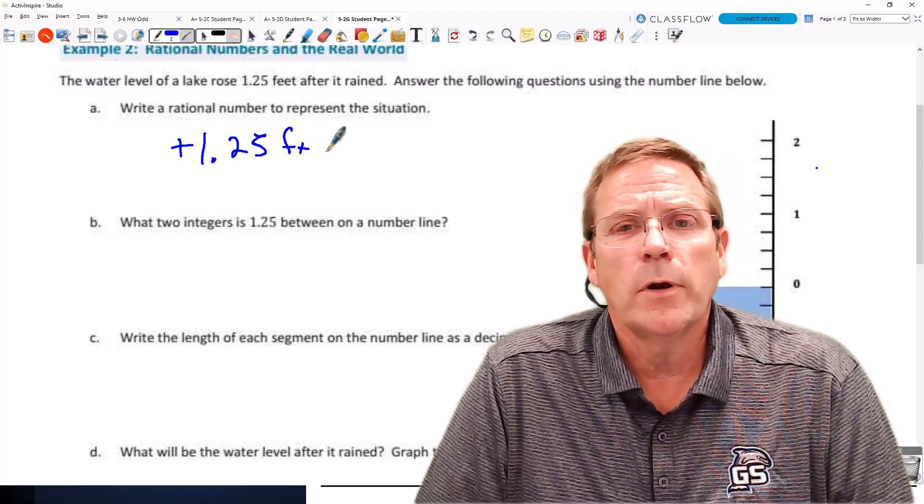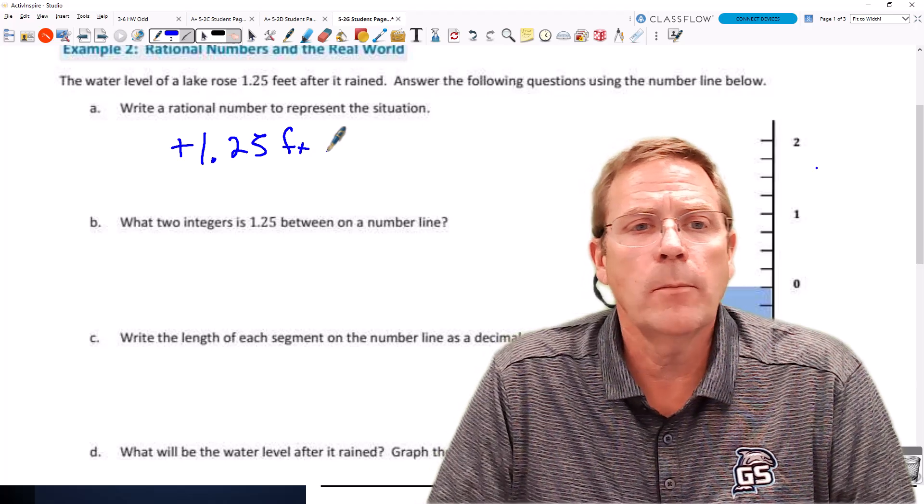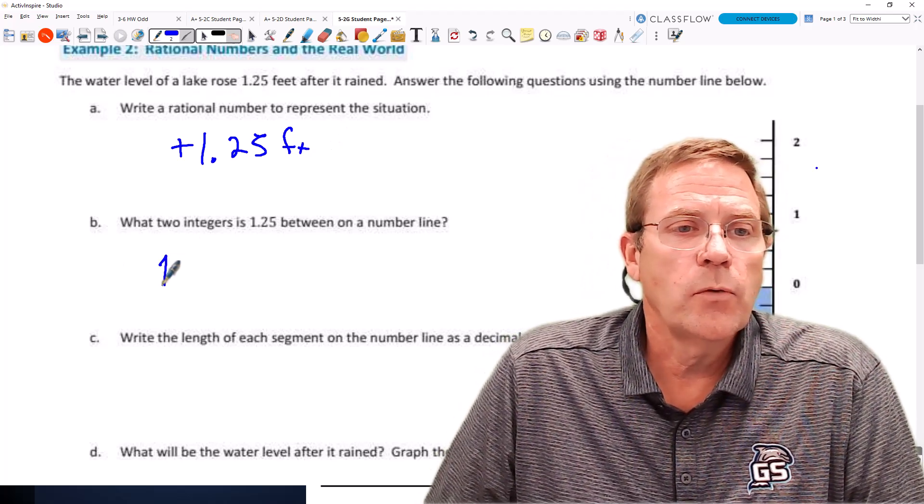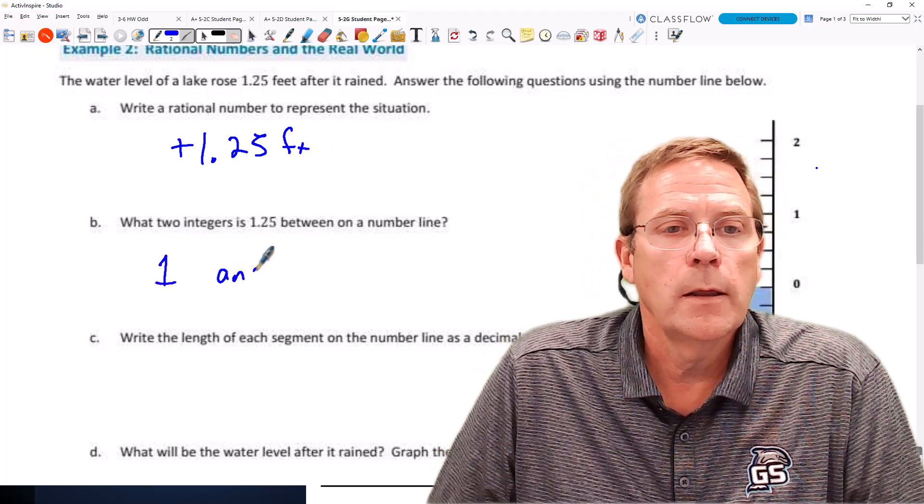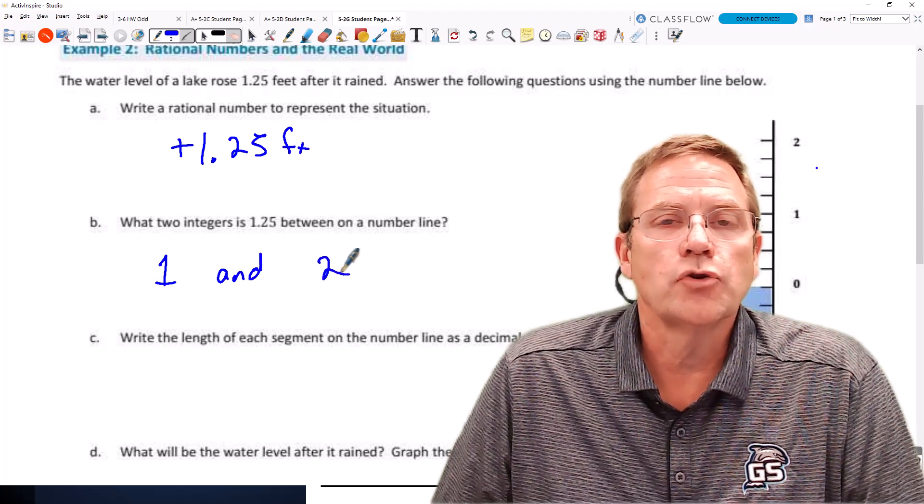Part B says, what two integers is 1.25 between on the number line? That is going to be between the integer 1 and the integer 2.